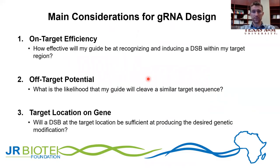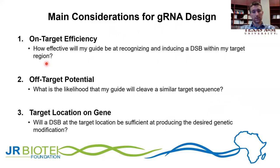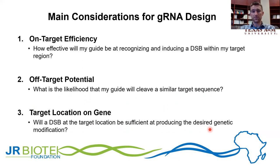When you're working with genes with thousands of different nucleotides, there's going to be a potential of many different guide RNAs that you can choose from. There are three major characteristics that you need to keep in mind when designing your guide. The first one is on-target efficiency — that is, how effective will my guide be at recognizing and inducing a double-stranded DNA break within my target region. The second consideration is off-target potential — what is the likelihood that my guide will cleave a similar target somewhere else within the host genome, creating some undesirable mutation. And third, target location on the gene: will the double-stranded break at the target location be sufficient at producing the desired genetic modification?